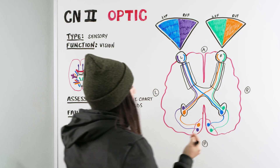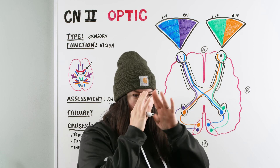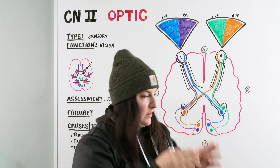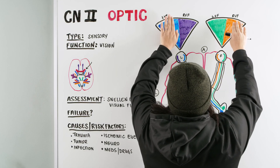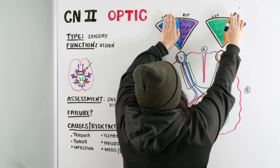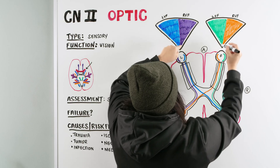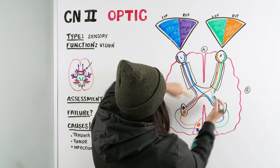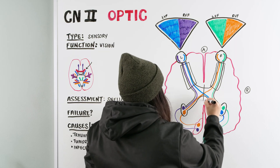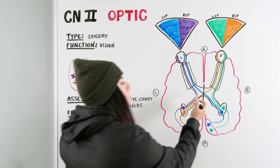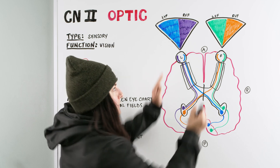If a patient is doing the visual field assessment and they're not getting anything peripherally — only seeing right down the middle in a narrow strip — that means they're losing their right visual field of the right eye and their left visual field of the left eye. If we follow those peripheral fields down, we're going to see that they're crossing right here in the optic chiasma. That can indicate some sort of issue right at the optic chiasma, causing them to still be able to see out of both eyes but with a loss of peripheral vision.